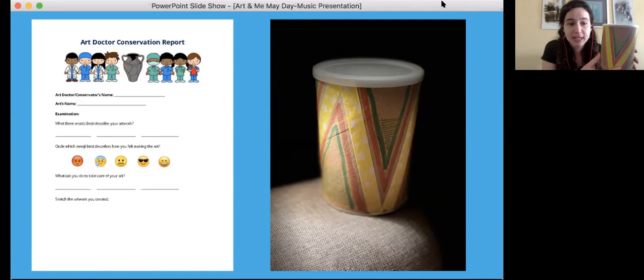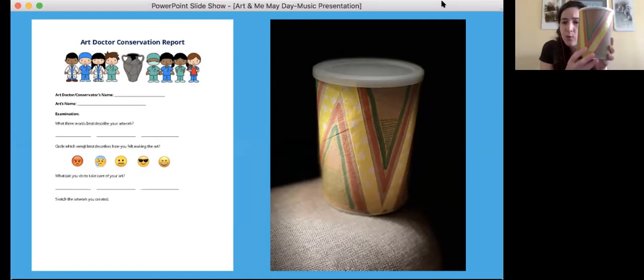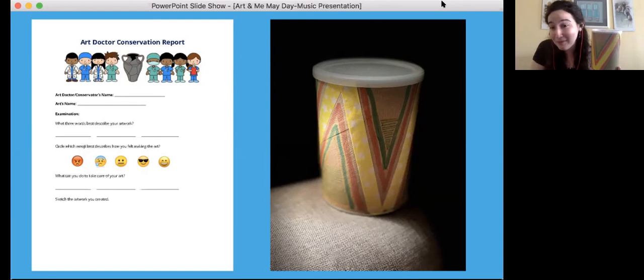The first question is the art doctor conservators name. My name is Laura, so that's what would go up top. But you would put your own name there. Then the arts name, that's also known as the title. Put in the chat or the Q&A what you might title this piece here. What do you think? I'll play it a little bit. Similar to before, there's a rattle part and it's also got a drum feature. I'm not always the most creative with mine, but I might call this rattling drum, so we always know a nice clear title.